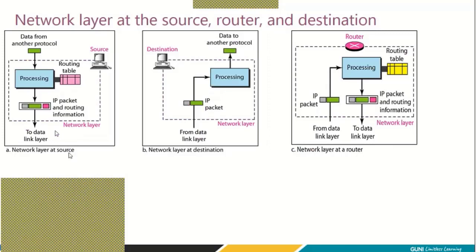At the source, data comes from the transport layer and goes into the network layer processing unit, which looks at the header, the routing table, and everything. IP packet and routing information become part of the header, and then it is forwarded to the data link layer. At the destination, data arrives from the data link layer. The network layer processes it — takes the header out — and delivers the same data to the transport layer, as shown by the green rectangle. It is doing its duty correctly.